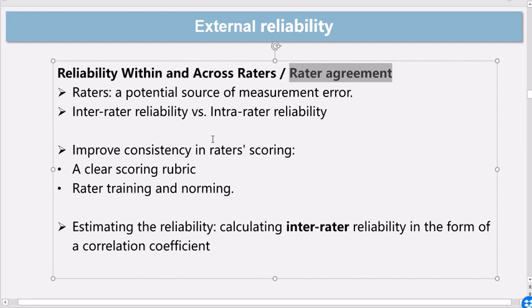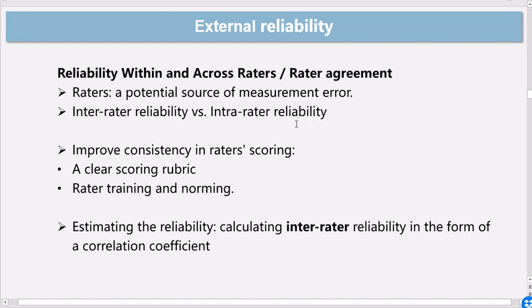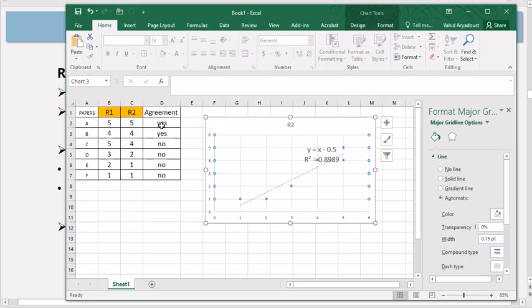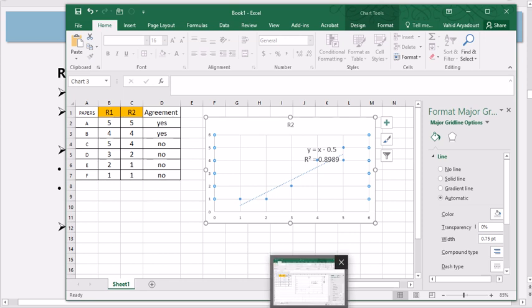If you read papers in language assessment and applied linguistics, you see that some authors simply rely on the inter-rater reliability. So if you read such papers, you should always remember that that doesn't mean that the raters really agreed upon the scores. Rather, they agreed upon the ranking of the scores, not the specific scores themselves.